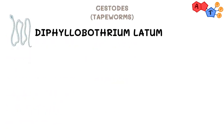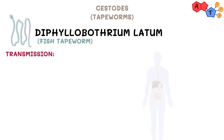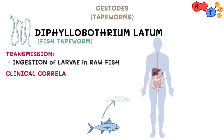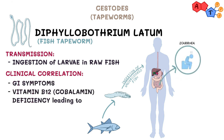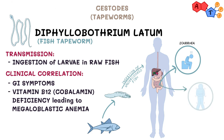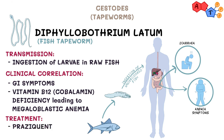The next worm on the list is Diphyllobothrium latum. Diphyllobothrium latum is also called the fish tapeworm, and it's the largest tapeworm out there. Upon ingestion of larvae in raw freshwater fish, it resides in the GI tract, causing GI symptoms such as diarrhea. It can also cause vitamin B12 (cobalamin) deficiency, leading to megaloblastic anemia. For treatment, we also use praziquantel — so even though it's the largest tapeworm, there is little to know about it.